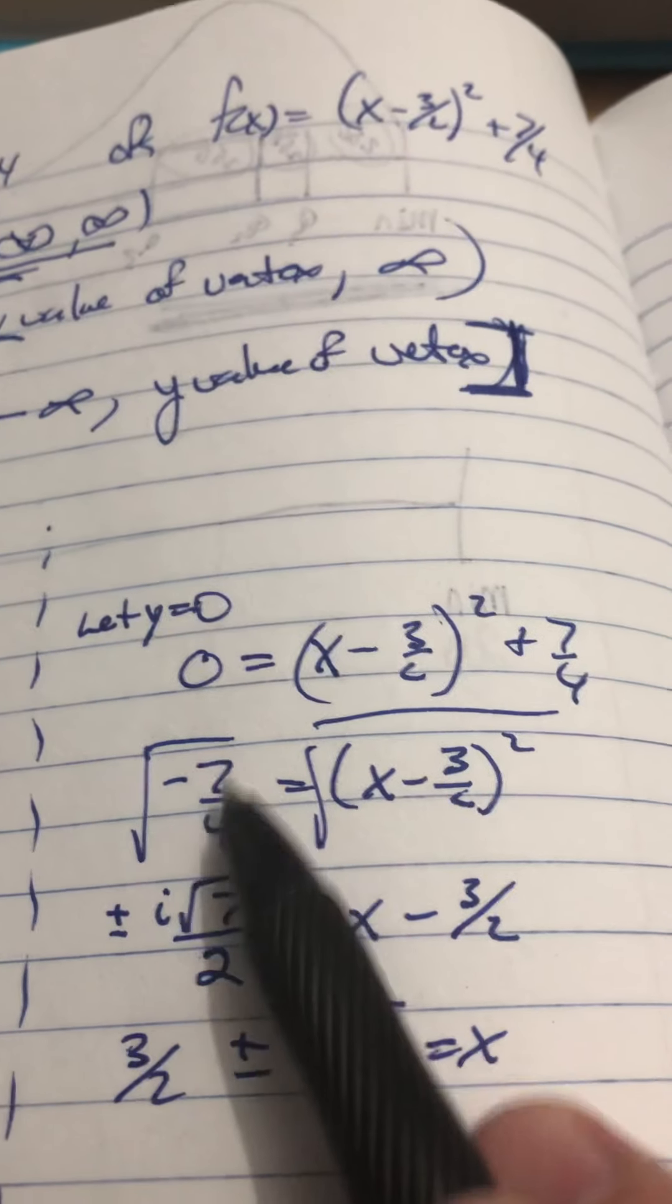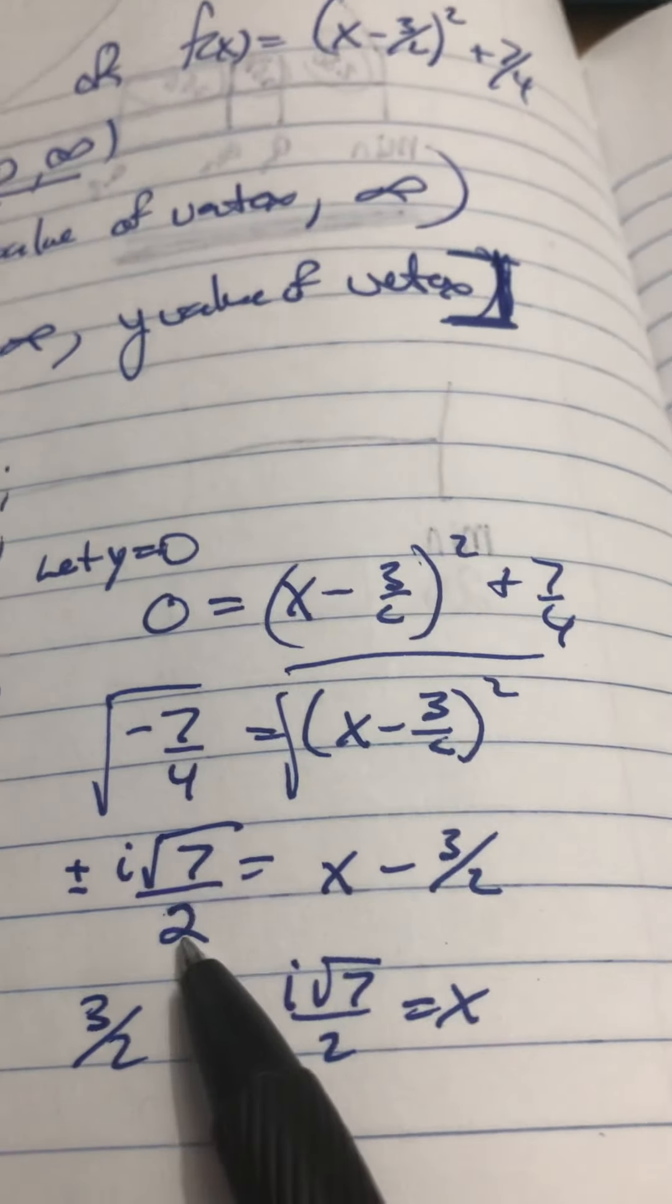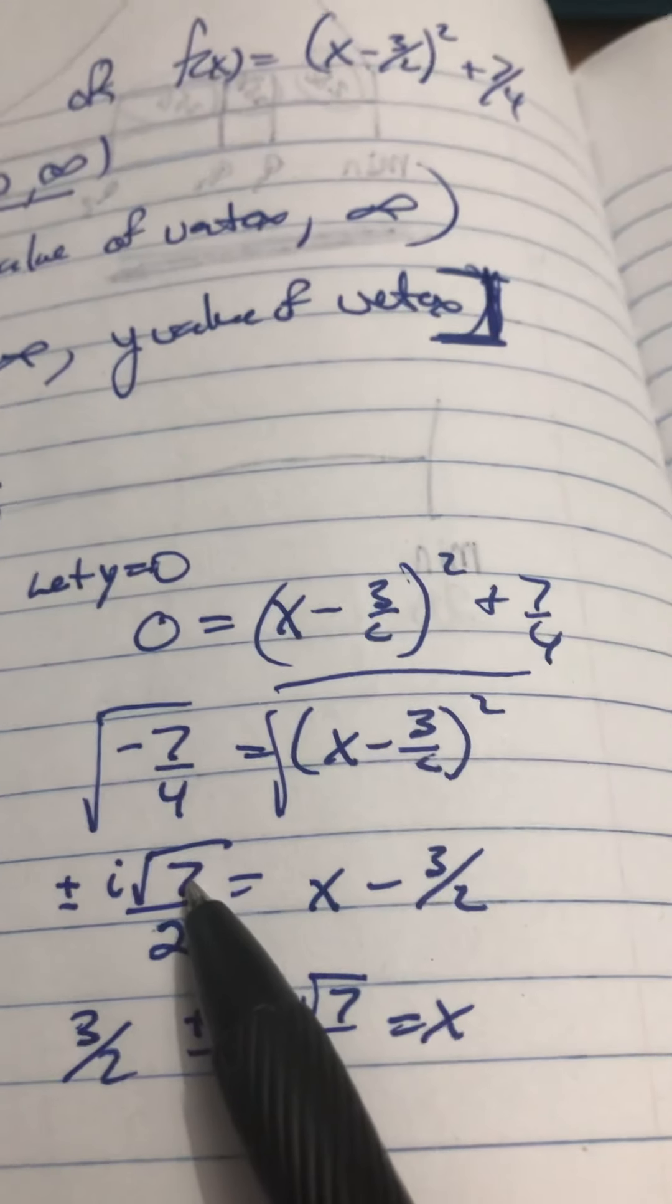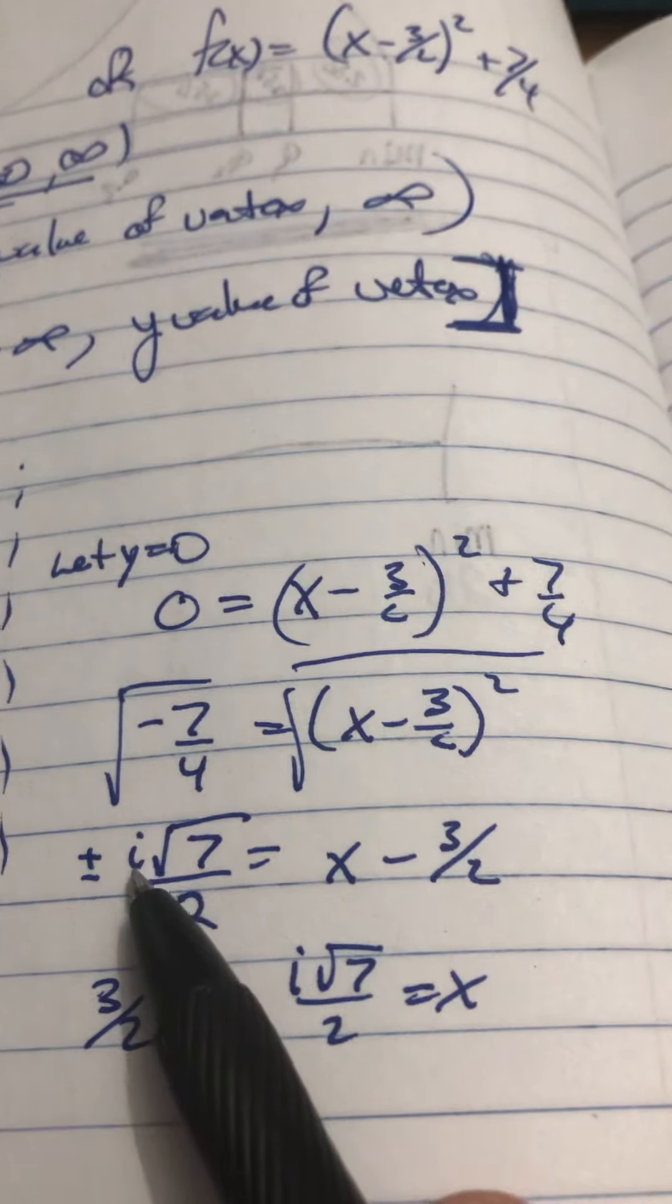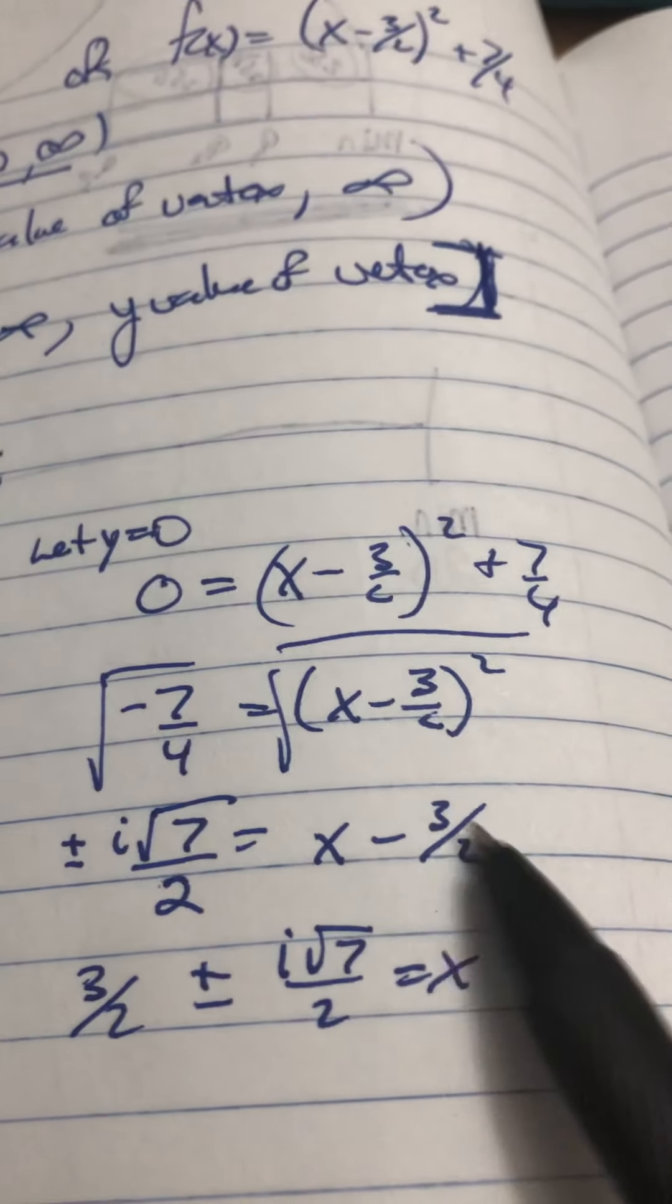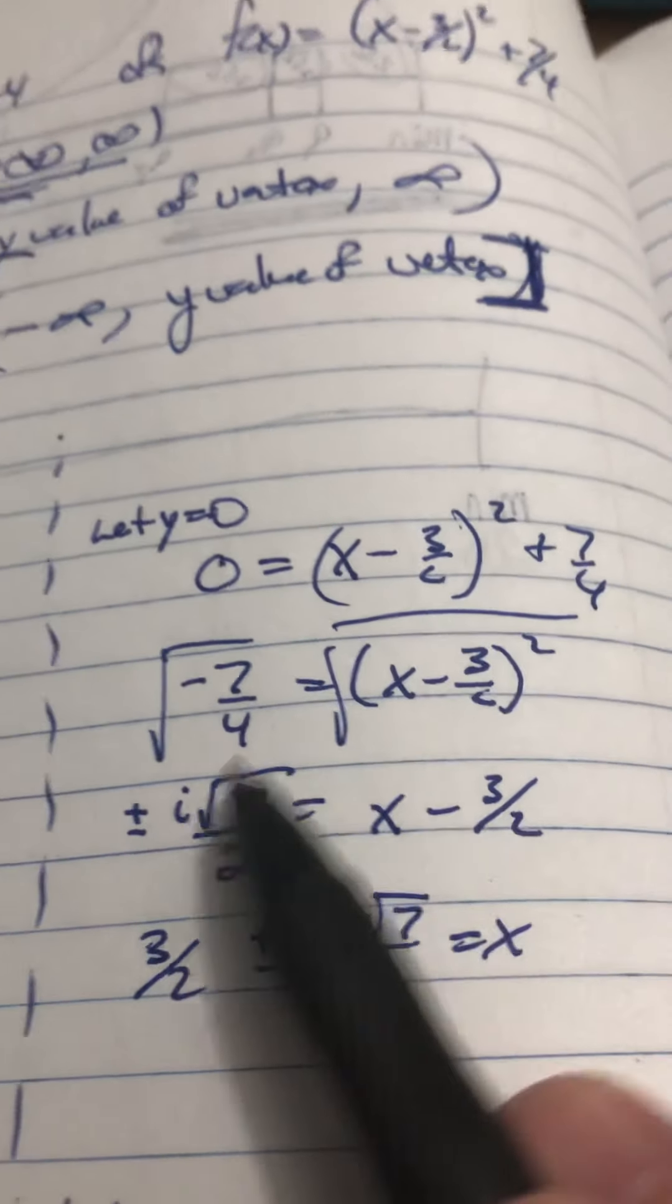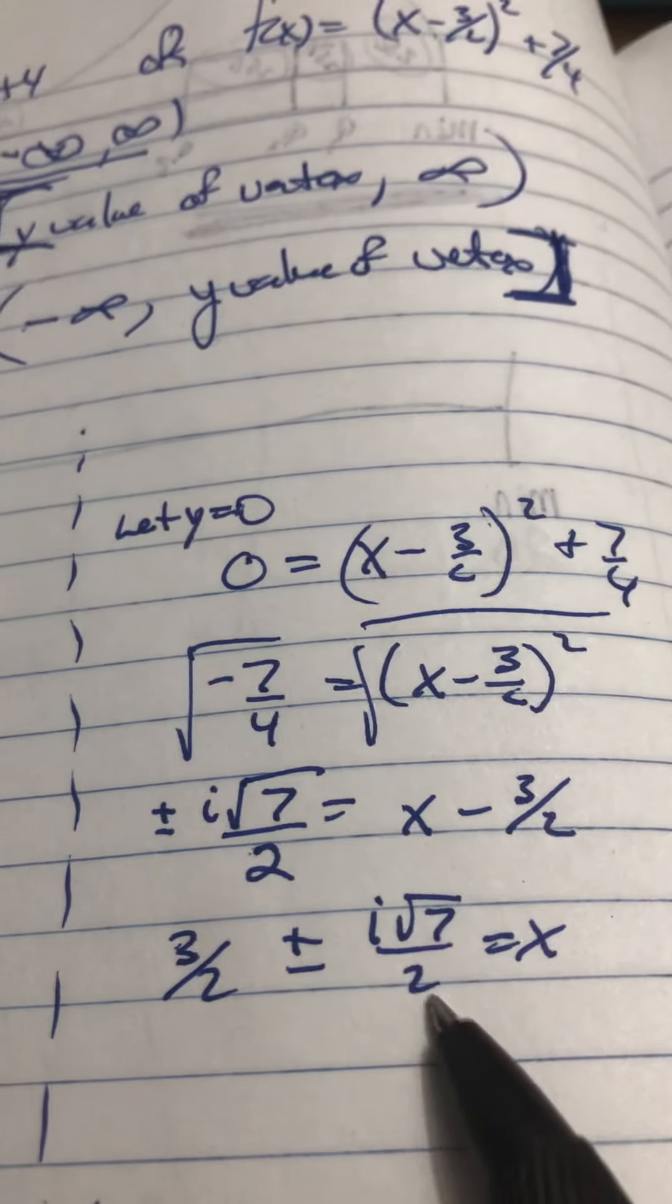Now, square roots split over division. So, the square root of 4 is 2. The square root of 7 is just the square root of 7. And because of the negative, we pull out an i. I take the square root of a square. And I have x minus 3 over 2. Bring the 3 over 2. I have 3 over 2 plus or minus i times the square root of 7 over 2.